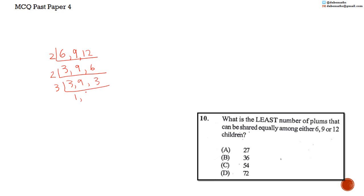2 cannot go into any of these exactly, so we use 3. 3 into 3 is 1. 3 into 9 is 3. 3 into 3 is 1. And we use 3. 1, 1, 1.